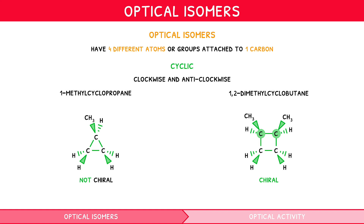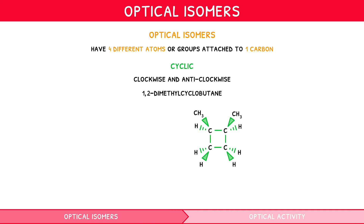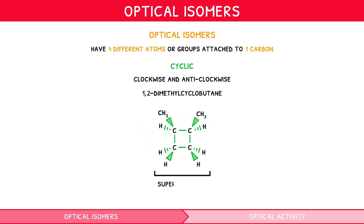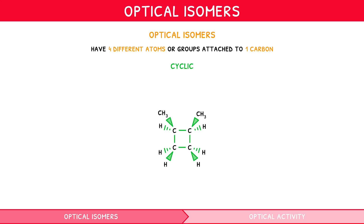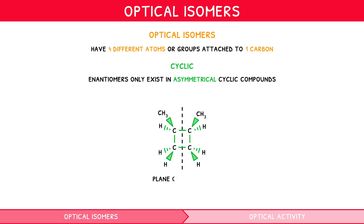However, if we attempted to draw the enantiomers for this molecule by drawing a dotted line to denote a mirror and following the same process as before, we create two superimposable mirror images, as when placed on top of each other they align. This example introduces a vital concept: in cyclic compounds with more than one chiral carbon, enantiomers and thus optical isomerism only exist if the molecule is asymmetrical. Reviewing our example of 1,2-dimethylcyclobutane, we can see this vertical plane of symmetry.